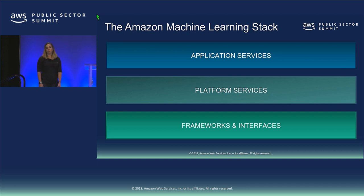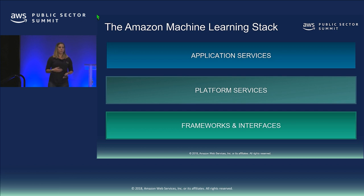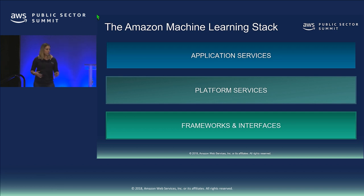We've built out our machine learning stack to bring technologies we've developed internally to our customers, and we want to reach developers of all different skill levels. You don't have to be deep in data science to take advantage of our ML platform on AWS. We structure things into roughly three tiers.